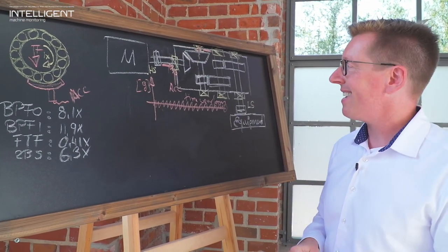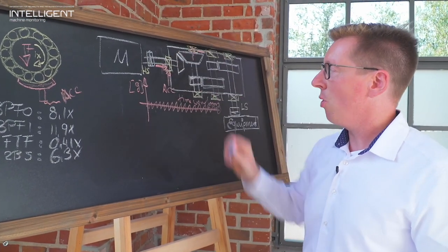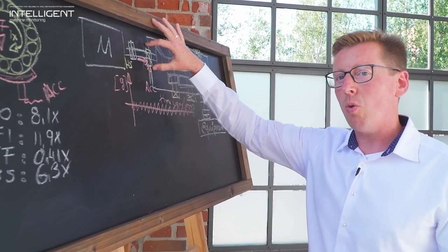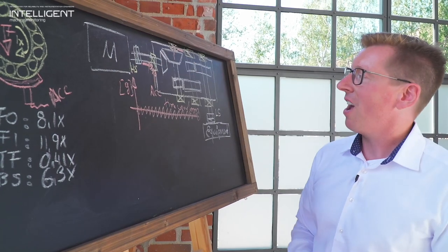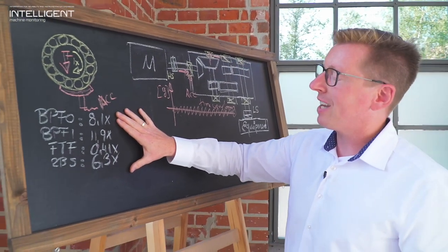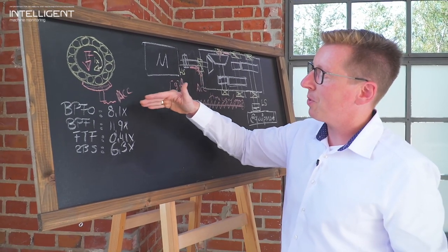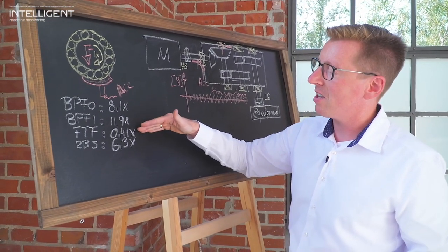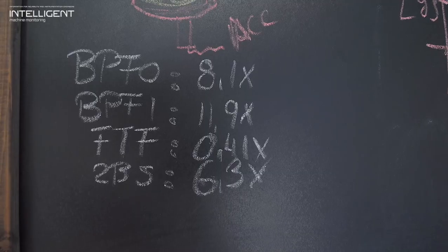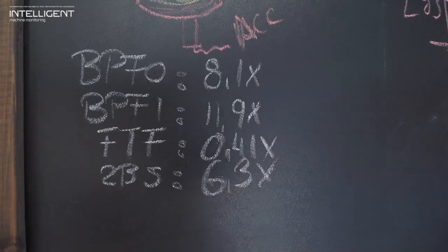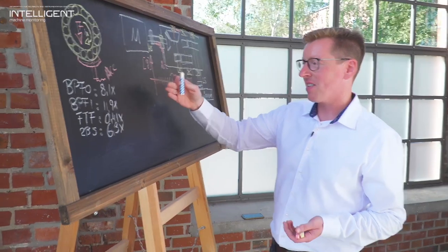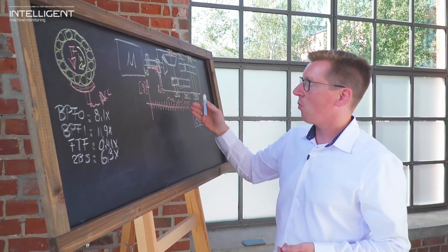In the last session we discussed that bearing failures are emergent failures. The signatures in a good running bearing are not visible at all. Only when they fail, the fault frequencies - the BPFO, BPFI, fundamental train frequency, or two times ball spin frequency - will only occur and appear when the bearing fails. We now need to extract the frequencies as they may occur within the time waveform data.